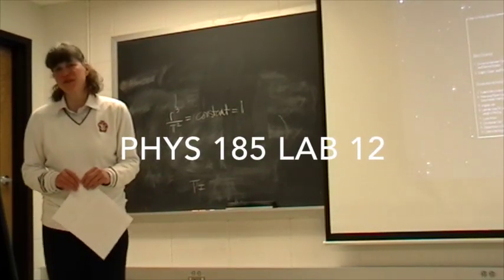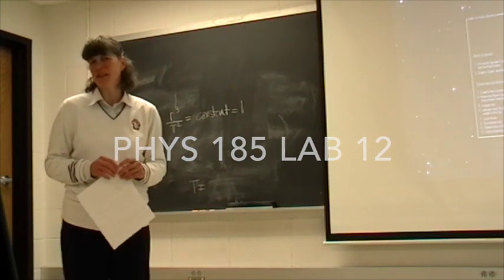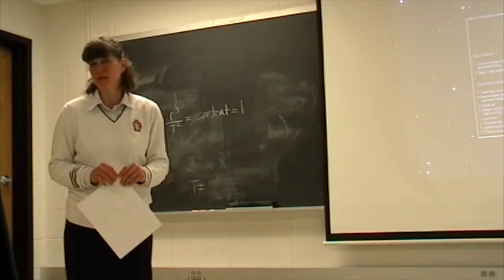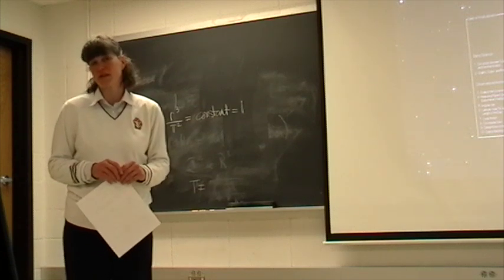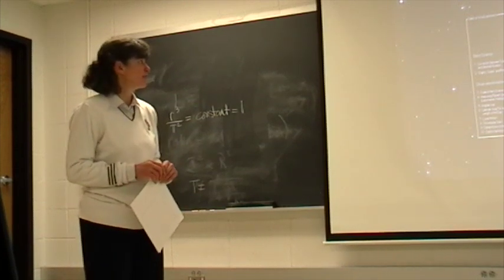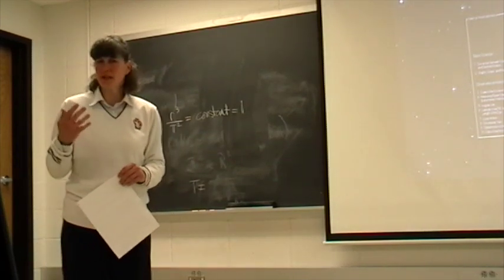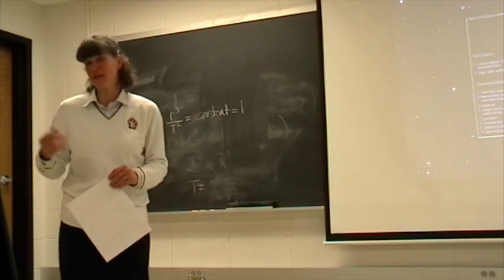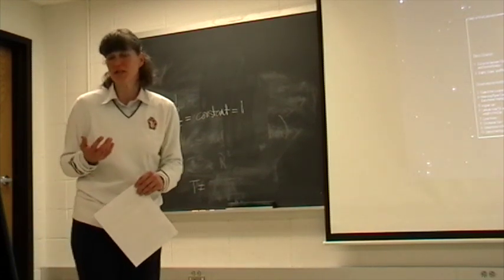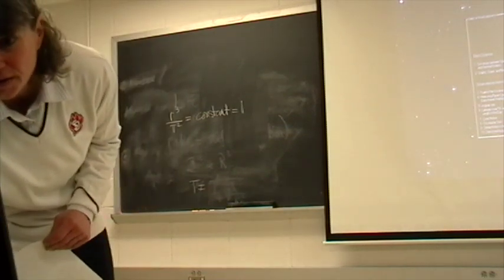Welcome to your last lab for Physics 185. In today's lab, we'll tie together a number of different things to help us actually determine some actual physical dimensions of a planet and its ring system. Today's lab will deal with occultation of a star, and by looking at how the light dims as a planet and its rings pass in front of the star, we can actually get information about the dimensions of that particular planet and its ring system.